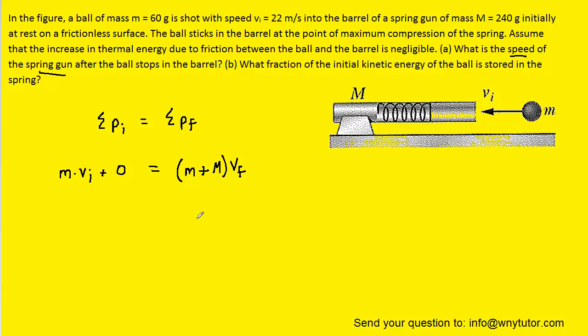Now keep in mind that the ball and the spring gun will be moving together after the collision, and so really when we calculate this final velocity it's going to be the value for both the spring gun and the ball technically.